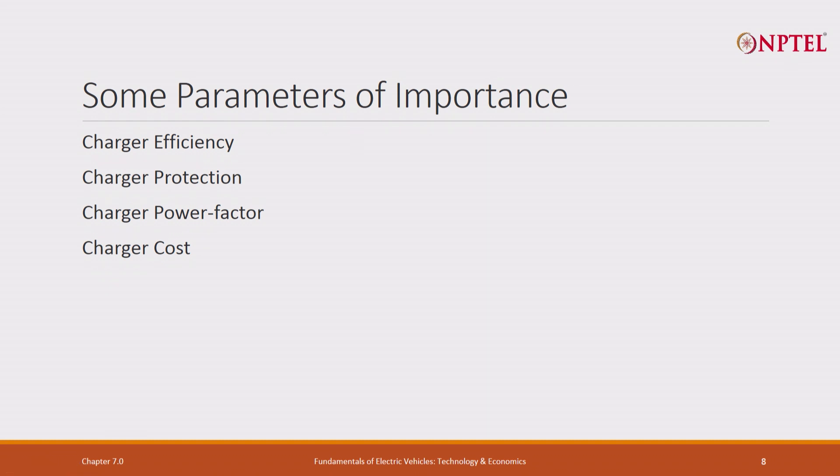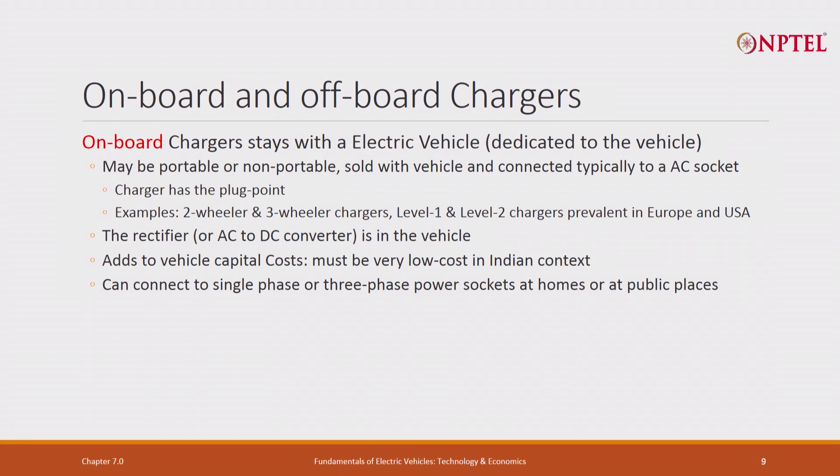Some of the parameters that are of importance. Charger efficiency. Why efficiency? Suppose it is 90 percent efficiency. 10 percent power is wasted during charging. I am paying for it. One, I am wasting power. I am paying for it. It also produces heat. Good chargers should have a higher efficiency. Ideally 96, 97, 98 percent. Poor chargers will have 80 percent efficiency. There will be in between chargers. It depends on the cost. If you are willing to pay higher cost, you will get a higher charger efficiency. Charger protection should always be there. Charger power factor correction and charger cost. These are the four parameters that I have to worry about.